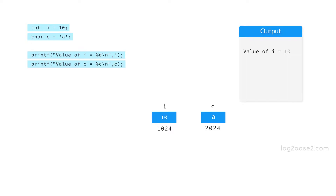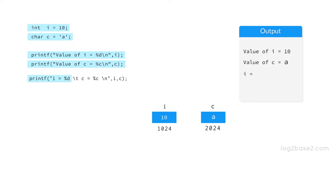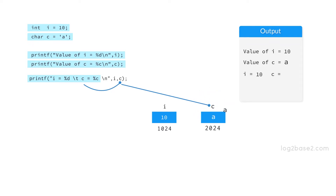Next, we have another printf function and it will print "value of c equal to", and in position of the format specifier %c, it will take the value from variable c which is 'a'. So "value of c equal to a" will be printed. Now, we can also print both variables in a single printf function. For the first format specifier %d, the value from the first variable after the comma will be taken, so "i equal to 10" will be printed. Next, for the second format specifier %c, the value from the second variable c will be taken, and "c equal to a" will be printed. This is how we can print two variables in a single printf function.